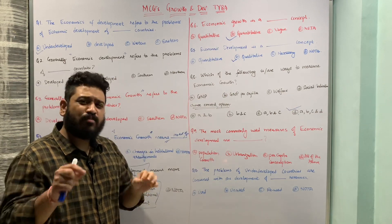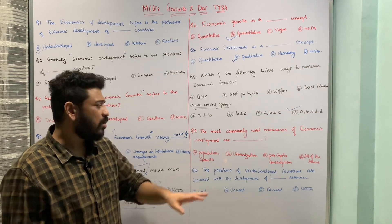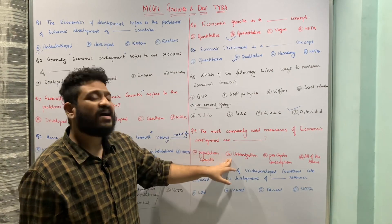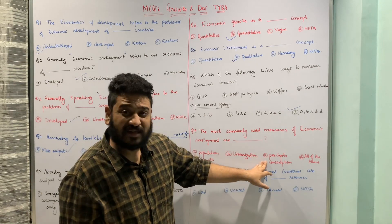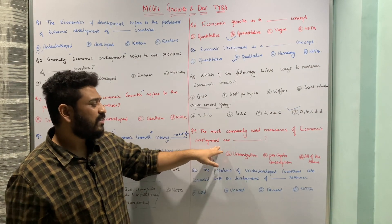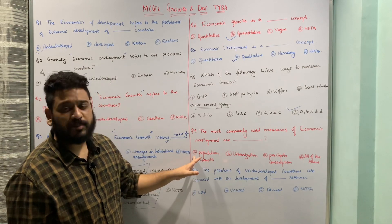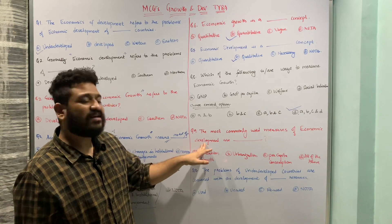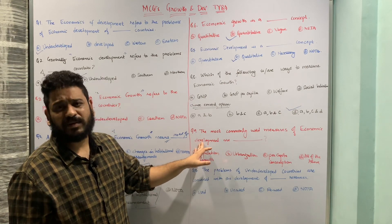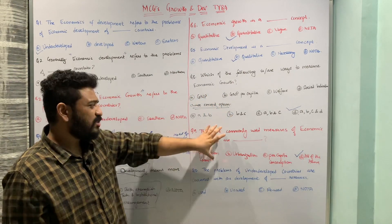The next question: 'The most commonly used measures of economic development are ___.' The options are: population growth, urbanization, per capita consumption, or all of the above. Per capita consumption, urbanization, and population growth all relate to economic development of a particular area, so option D — all of the above — is the correct answer.